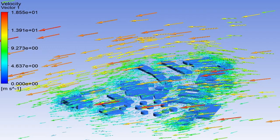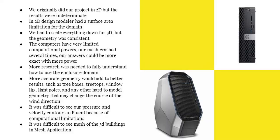With any project, you're going to have issues, and with this project we had a lot. Originally we did the project in two dimensions, but our results weren't very accurate — the velocity didn't really resemble a cold front; it was only about two meters per second. That's why we moved to 3D, but 3D doesn't run very well. It took us time to adjust settings and meshing. Also, when working in 2D, there's a surface area limitation — if your faces exceed a certain tolerance, it's hard to make a surface from that sketch.